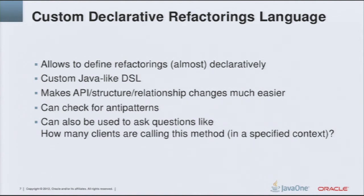As we are using it in this talk for checking for anti-patterns, it can also be used to guard against anti-patterns. And we can also say: how many clients are calling this method with parameter zero, for example, and it can tell us which callers are passing parameter zero to some method.